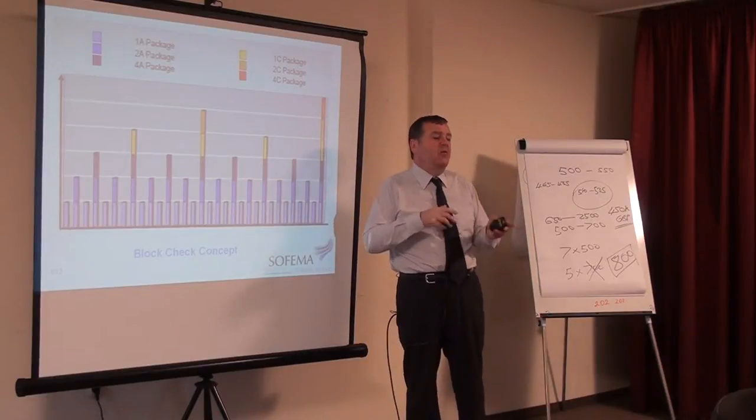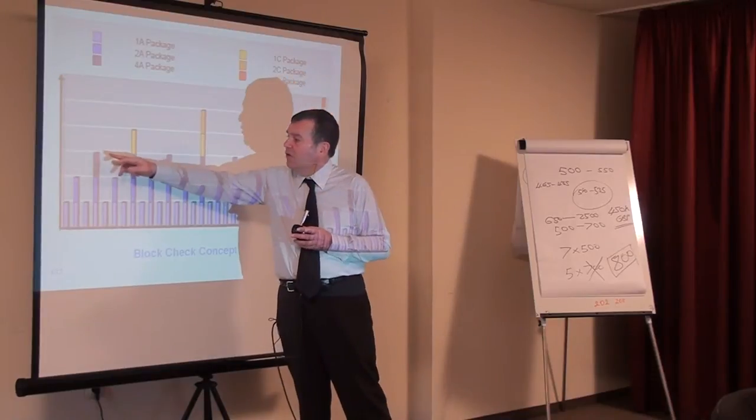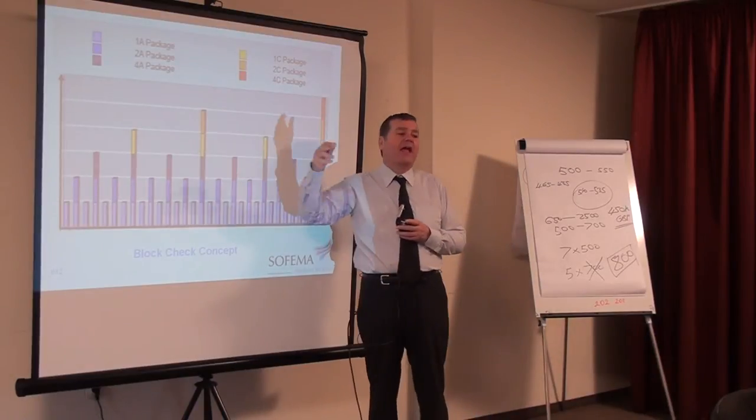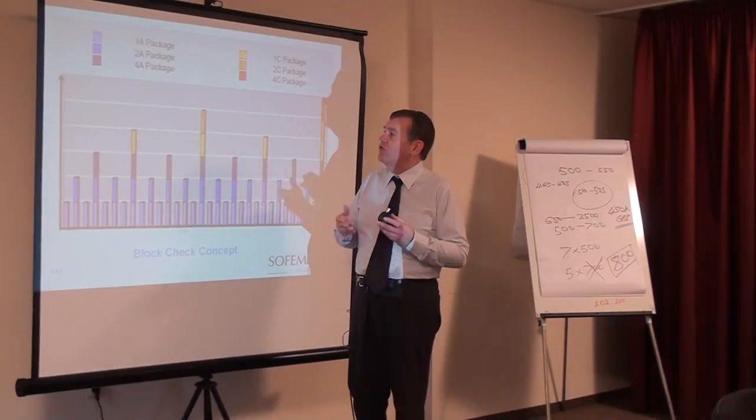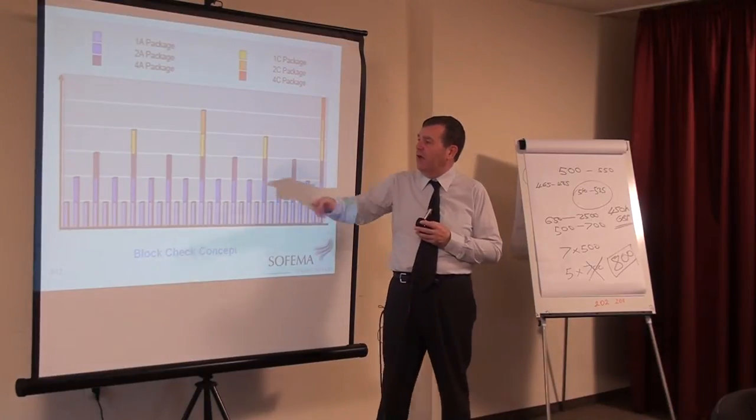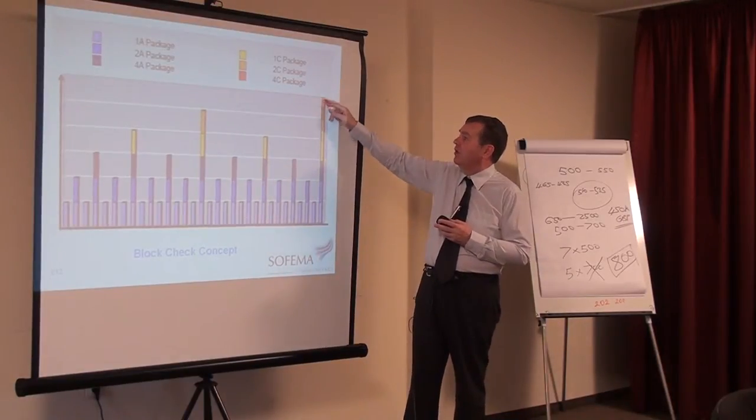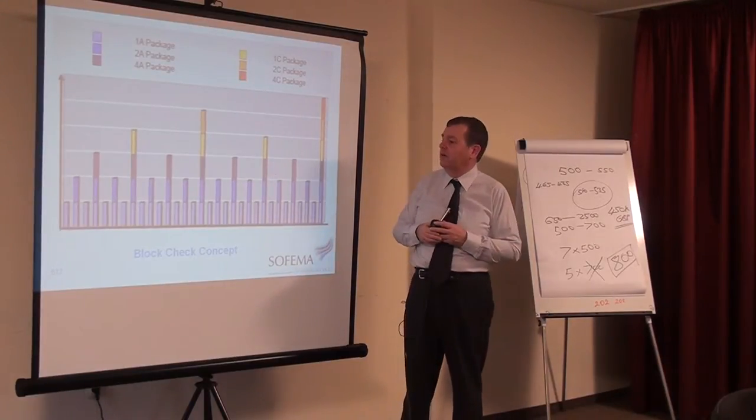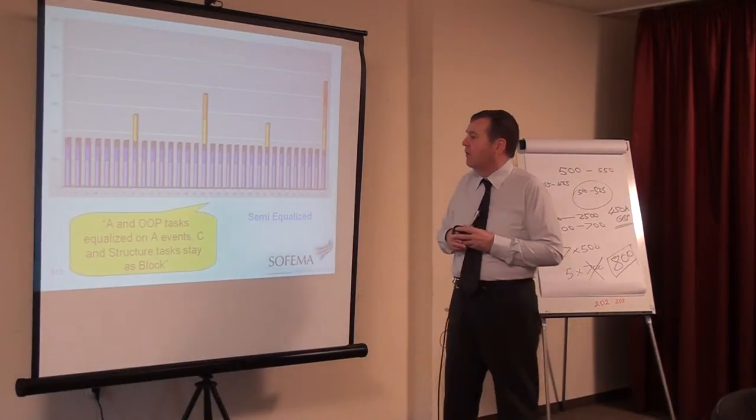Some companies deal with it in a particular way. For example, they have enough labor to do the A checks and they outsource the C checks. So that's one way of doing it. Another company has enough labor to do this with some overtime, and they bring in contract labor for this one. So many different ways of looking at this picture. There is one option. Let's look at what's happened here.